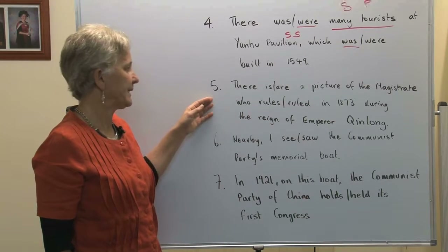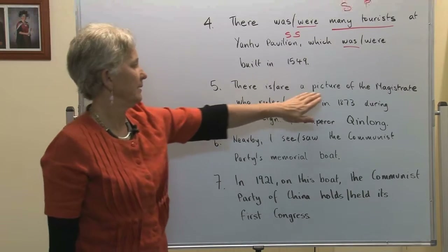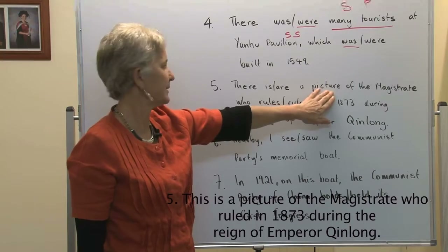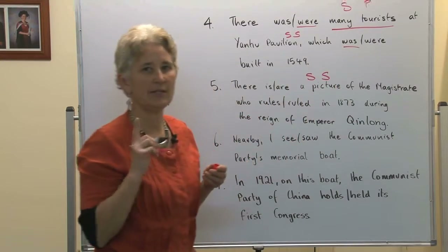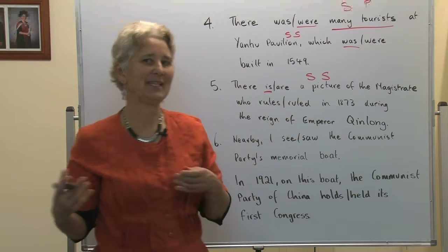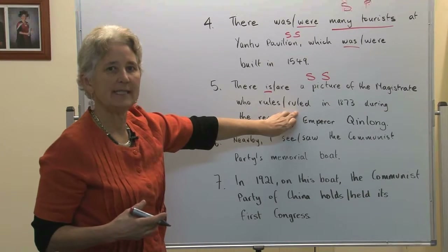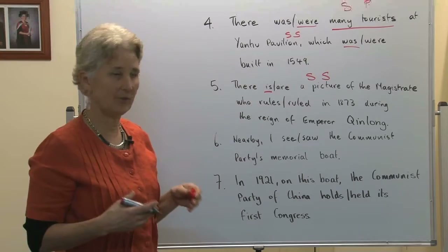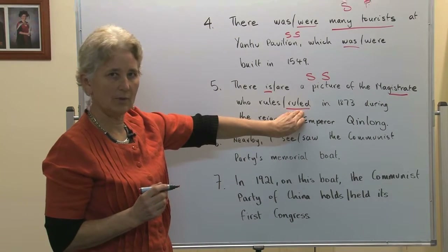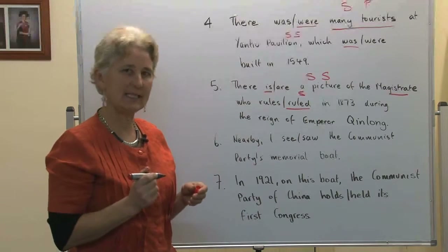Number five: there is a picture of the magistrate who ruled in 1873 during the reign of Emperor Qianlong. Once again, with 'there is / there are', the grammatical subject comes after the verb. A picture is the grammatical subject — it is singular — there is just one picture, so it takes 'is'. It's in the present tense because it is always there. The magistrate ruled — this is in the past tense because he ruled in 1873, something that already happened. The magistrate is the singular subject of this clause, and 'ruled' takes the regular -ed form of the past tense.